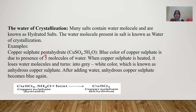A key example in your syllabus is copper sulfate pentahydrate: CuSO4·5H2O. 'Penta' means 5, so 5H2O. It is blue in color — the blue color of copper sulfate is due to the presence of these 5 molecules of water. When copper sulfate is heated, there is a loss of water molecules, and the fixed amount of water molecules gives color to these salts, so when heated the color changes.